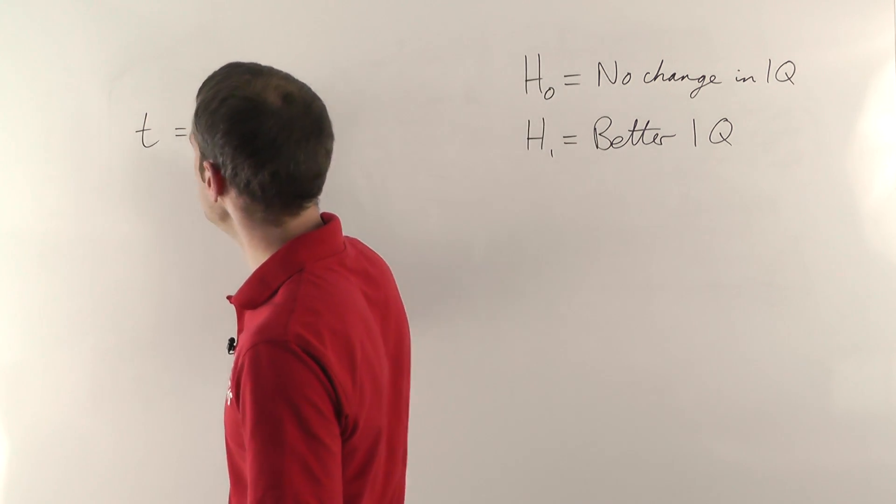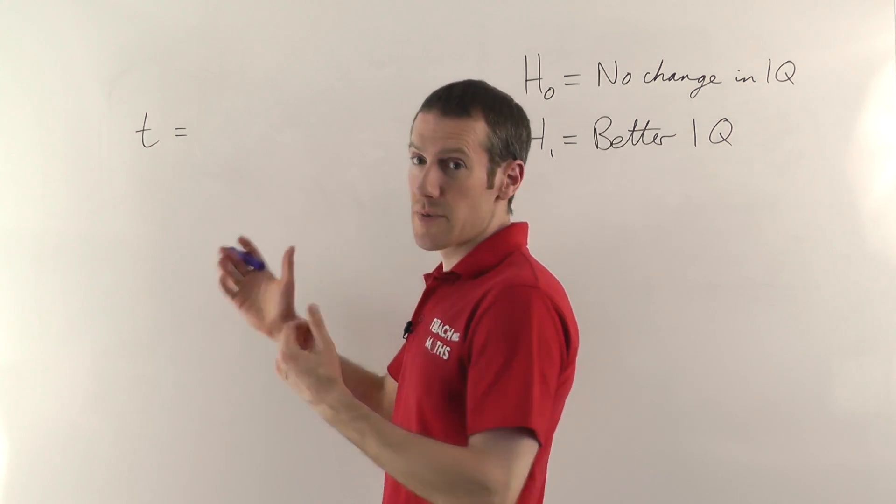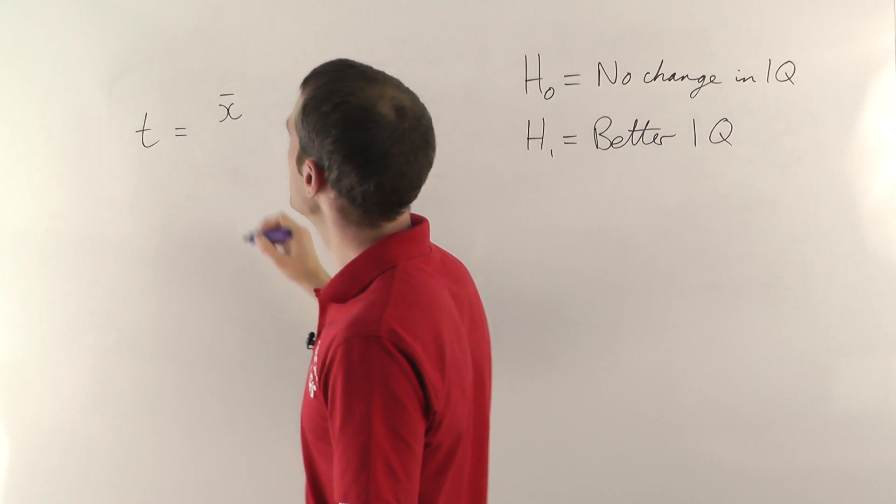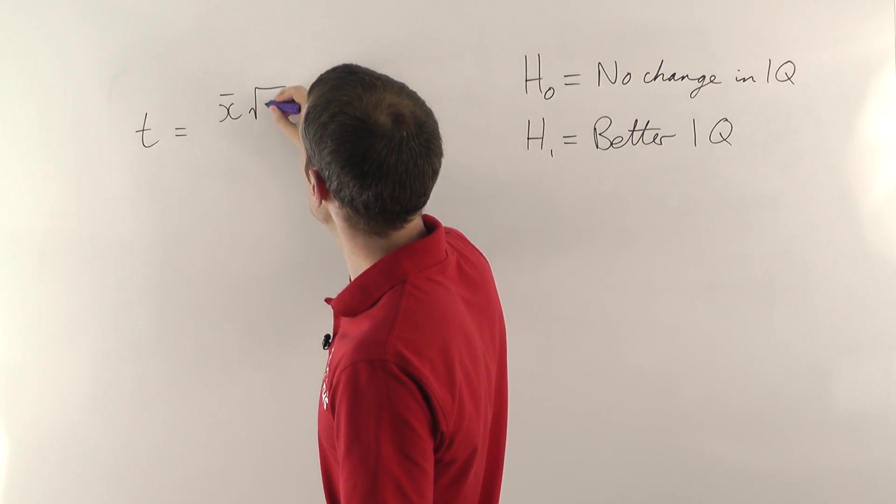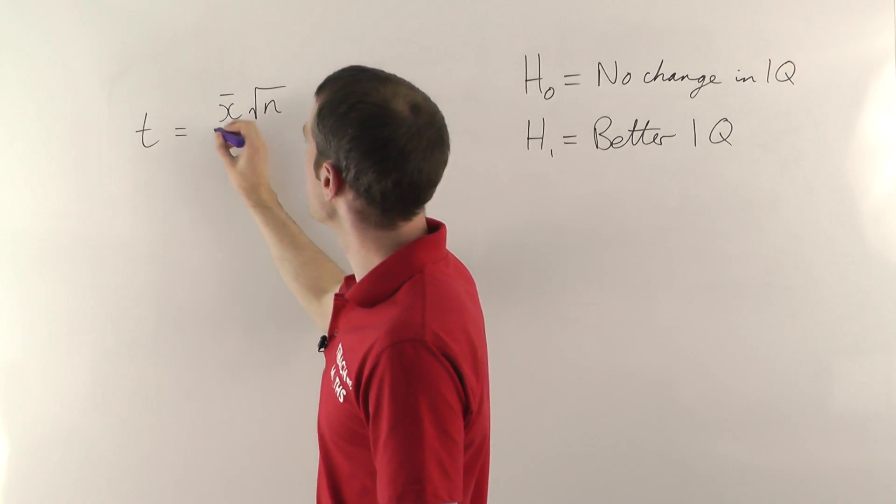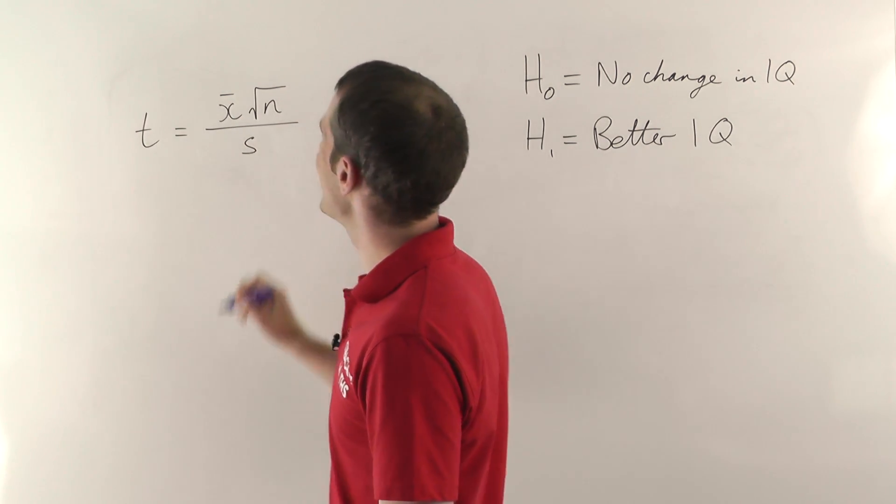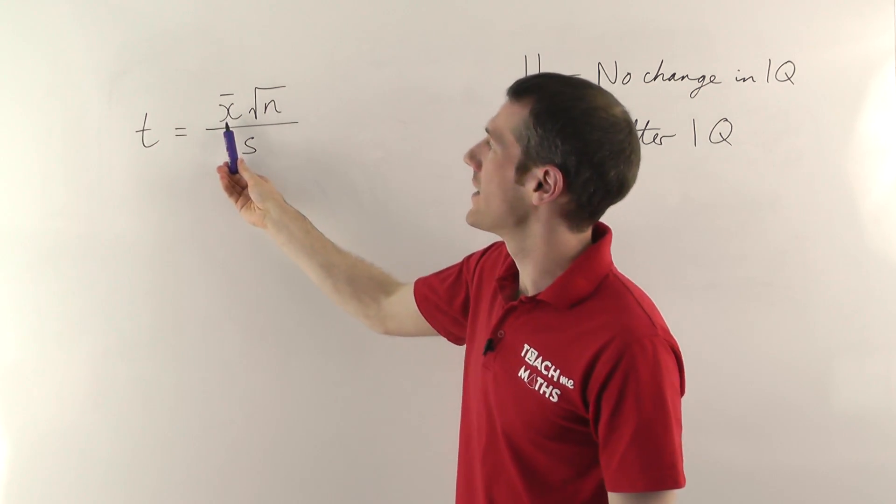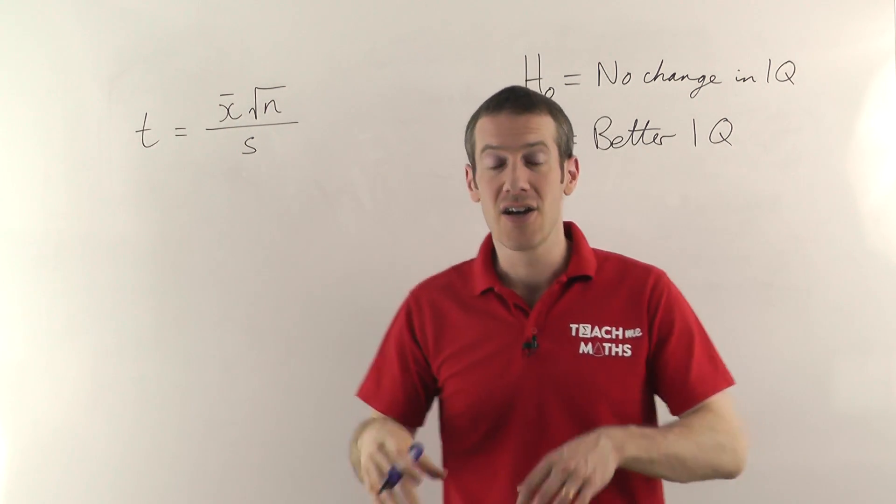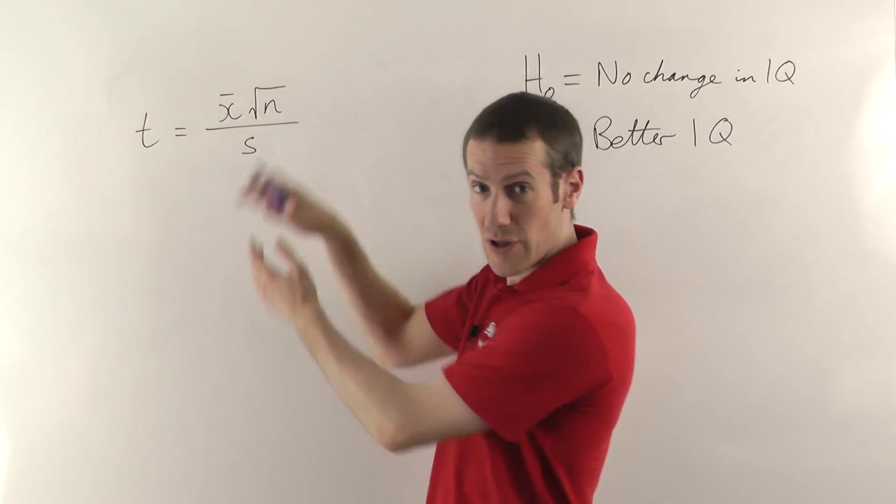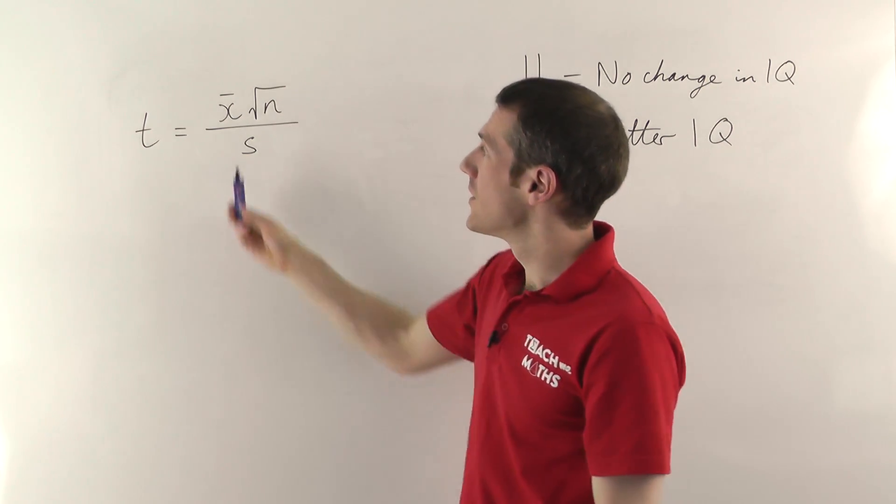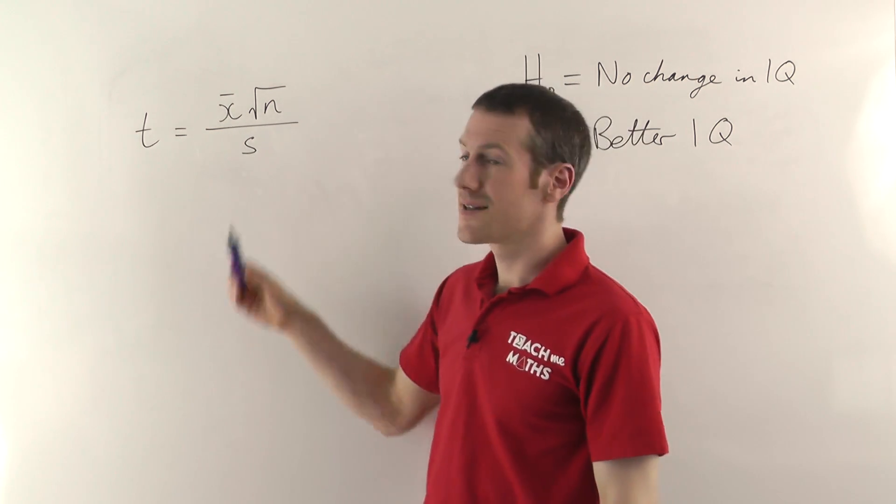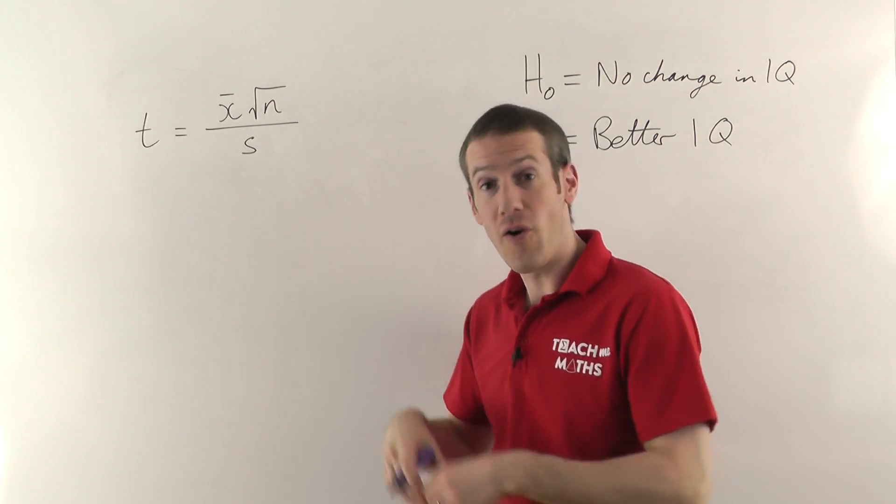So t, the value we're going to be comparing in our t-table in a moment, is the mean times the square root of n, the number of samples, divided by s, the standard deviation. Now it's very important here that you realize x-bar here is not the mean of the samples, it's the mean difference. So all those differences that we had in that table, x-bar is the mean of those differences. S, the standard deviation, again is the standard deviation of the differences.